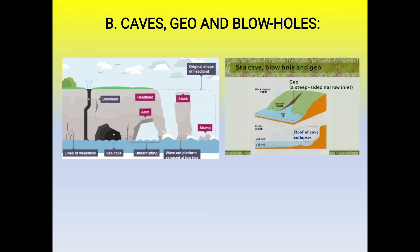Waves can erode soft materials more easily and faster than hard ones, forming holes in the rocks. Repeated action of waves and tidal currents enlarge these holes into gaps. Hydraulic action, swirling, solvent action, and compressional tensions work simultaneously so that gaps are carved out into caves known as sea caves.